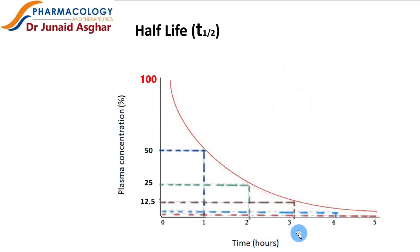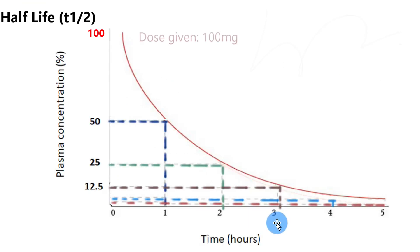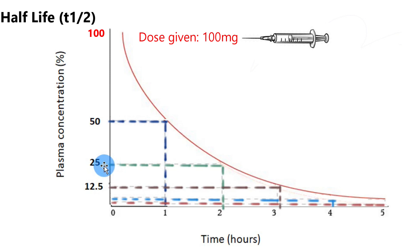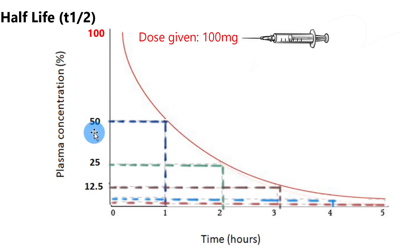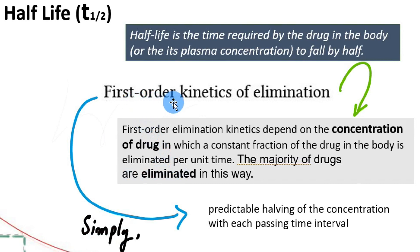Now let's see what happens after three hours, or three half-lives. Since we only have 25 milligrams of the drug left, half of that would be 12.5 milligrams. So we go down to 12.5 milligrams, or 12.5%, meaning that in the third half-life period we are eliminating 12.5 milligrams. So: first half-life eliminated 50mg, second half-life 25mg, and third half-life 12.5mg — because the rate of elimination follows first-order kinetics.